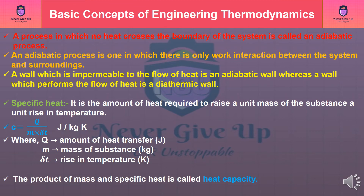Specific heat: it is the amount of heat required to raise a unit mass of a substance by a unit rise in temperature. Specific heat C is equal to Q divided by M multiplied by delta T, where Q is the amount of heat transfer in Joules, M is the mass of the substance in kilograms, and delta T is the rise in temperature in Kelvin.